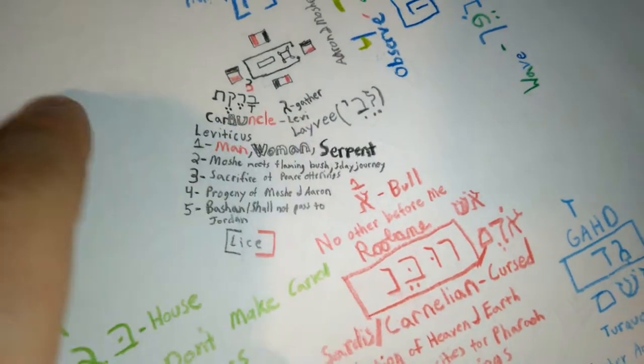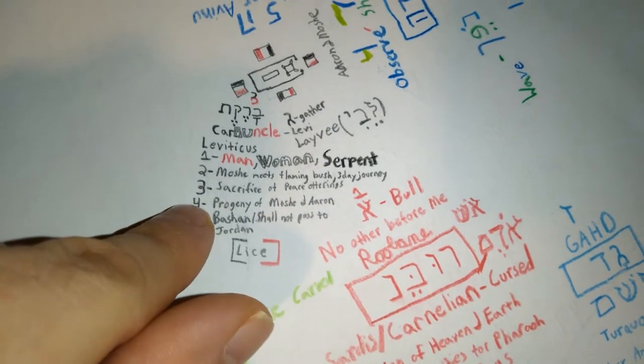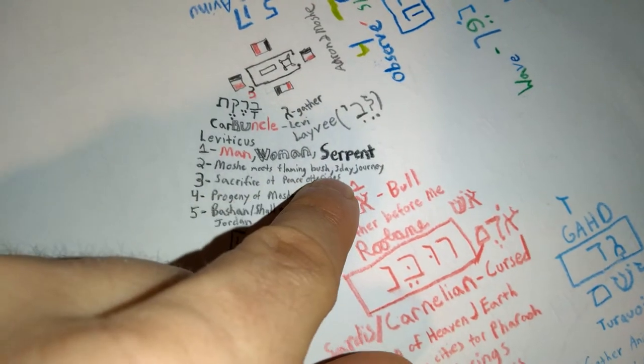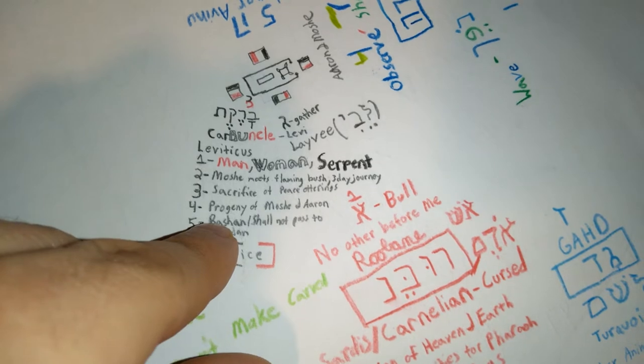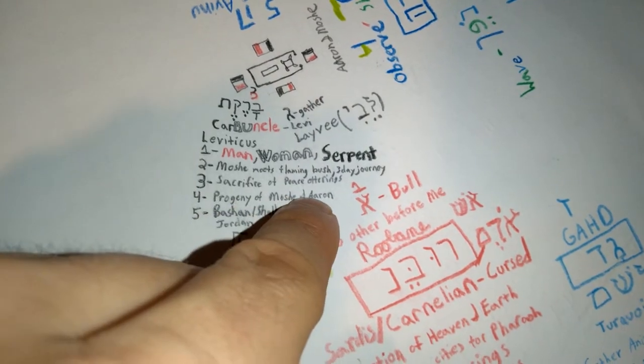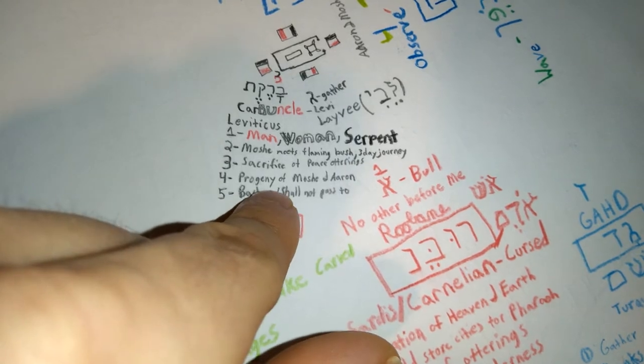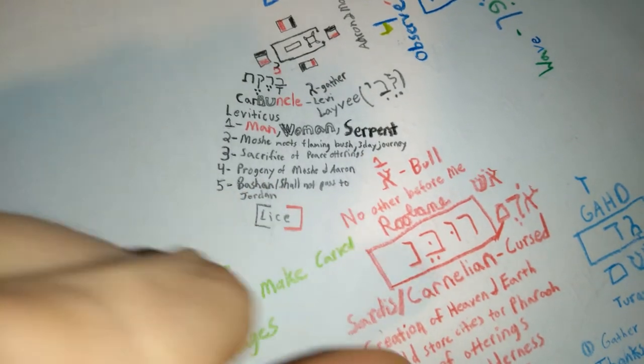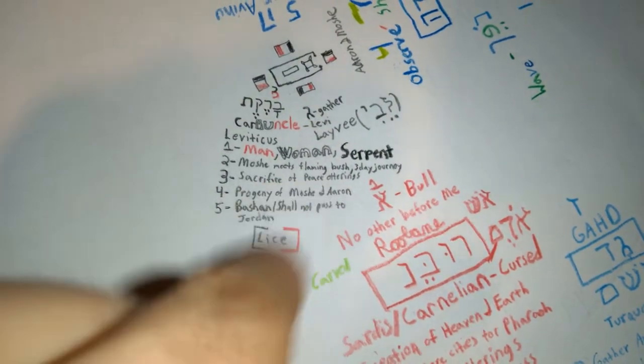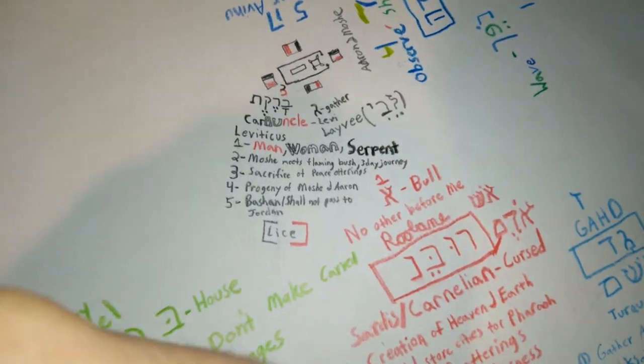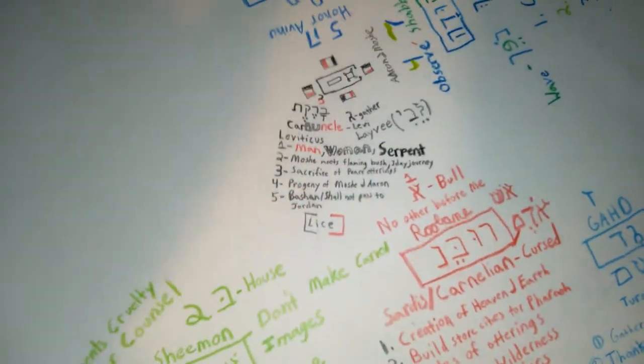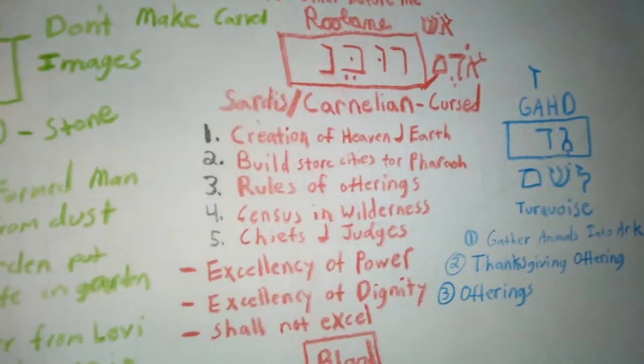Then you notice over here, a food offering of first fruits. And for three, we're going to be looking at the sacrifice of peace offerings. The progeny of Moshe and Aaron. The Bashan shall not pass to Jordan. Lice, which is obviously the third plague. And I think this plague was hail.